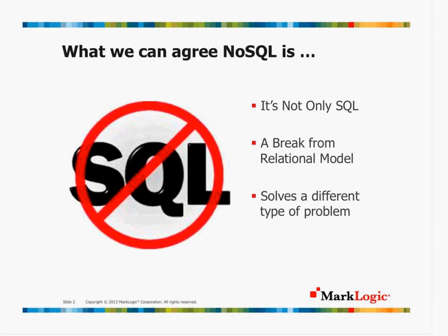The document-centric data store is probably the most flexible of the columnar, the graph, and the key-value stores. It's flexible — maybe there's some selection bias because I spend most of my time working on problems where it is a good selection. People who have a simpler key-value lookup problem — while a document store can do a key-value lookup, it might be overkill. It's just easier to solve with a big hash table in the sky. Object databases were around for a long time but I've never talked too much about them — perhaps because the schemas were still so tight that evolution was hard.